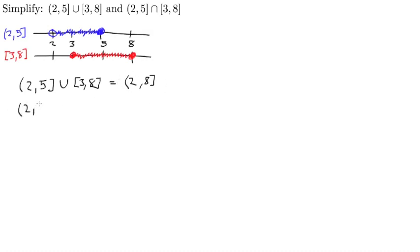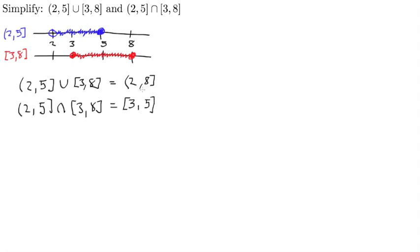For the intersection, we want the values that are in both intervals. The first value in both intervals is 3 — it actually is an element of both — so I'll use a closed bracket for 3. The last value in both intervals is 5, which is also in both, so I'll use a closed bracket for 5 as well. So the union is (2, 8] and the intersection is [3, 5].